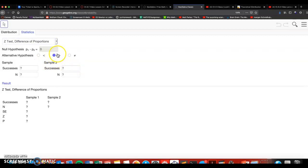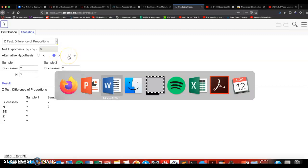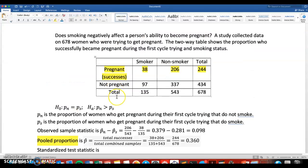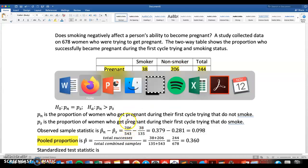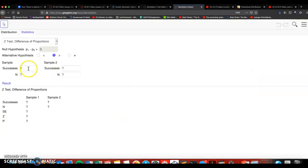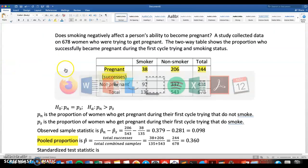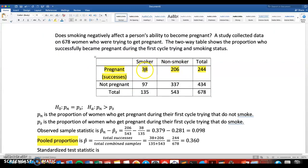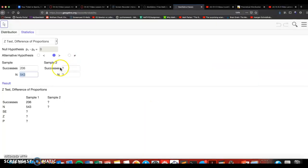So we picked greater than as alternative hypothesis, and I did my first group, p hat n, to be non-smokers. So this was 206 over 543. So in GeoGebra, I'm going to put 206 out of 543 for sample one. In sample two, I set to be the smokers, 38 out of 135. And click on enter.